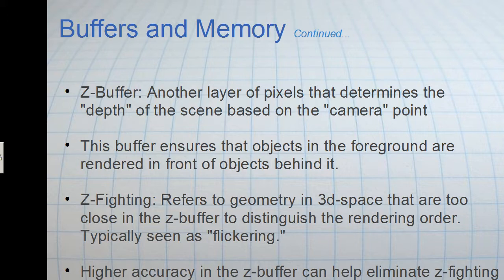So that's what it's referred to as zfighting. And the way that you can get around that is to either increase the distance between the two objects or have a much higher accuracy in the zbuffer.